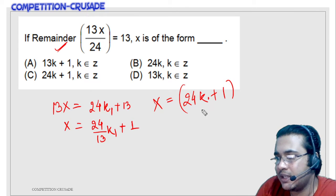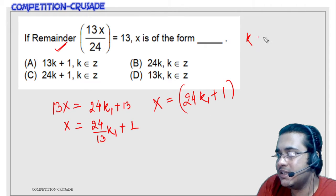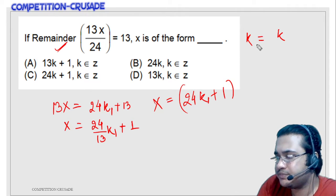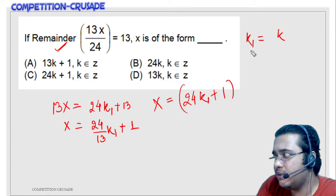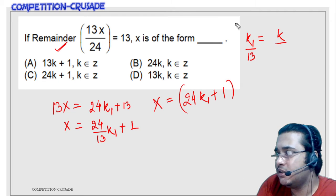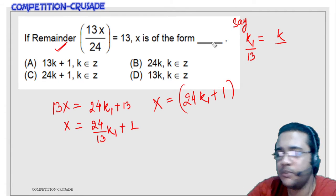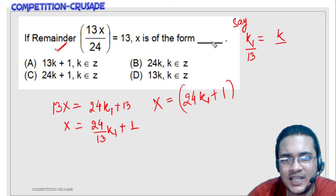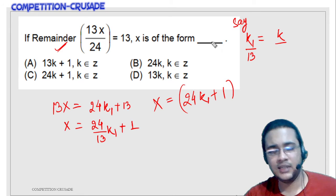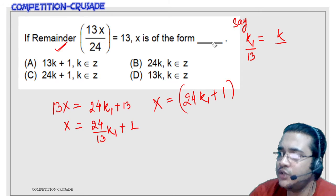I can just write a subscript k1, and k1 is equal to k upon 13. We can say that k1 upon 13 is k, so we can just change the denominator and use it like this.